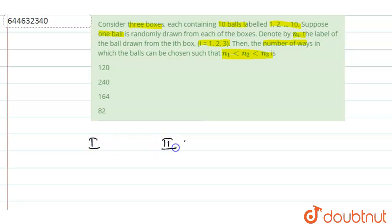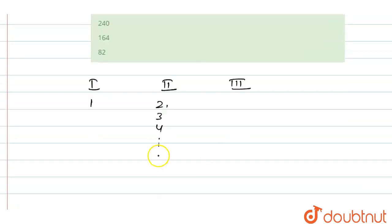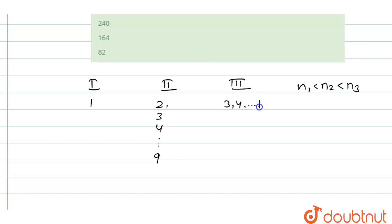So first, this is box one, this is box two, and this is box three. We have to take balls such that n1 < n2 < n3. If we take ball labeled 1 in the first box, there are choices 2, 3, 4 up to 9 for the second box — we cannot take 10, since then there would be no valid choice for box three. If we fix 1 in box one and 2 in box two, the remaining choices for box three are 3, 4, 5 up to 10, giving 8 ways.